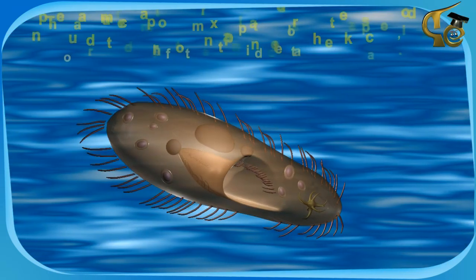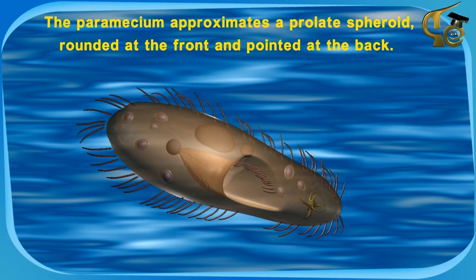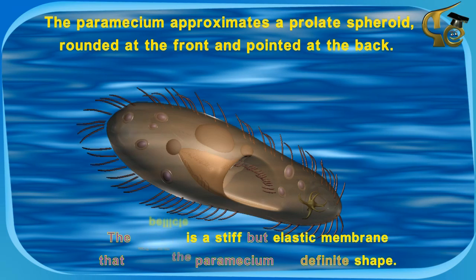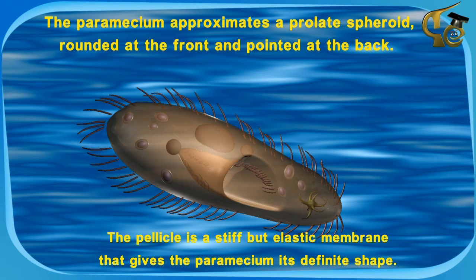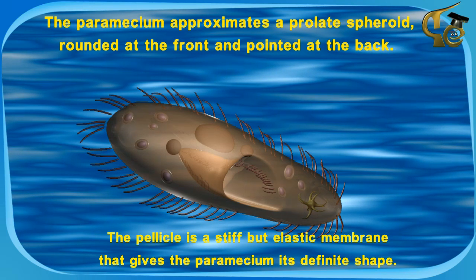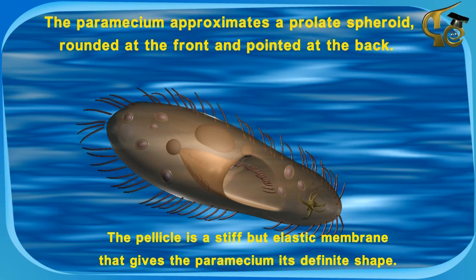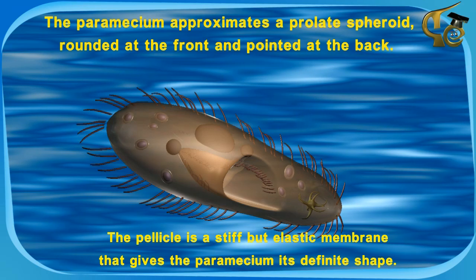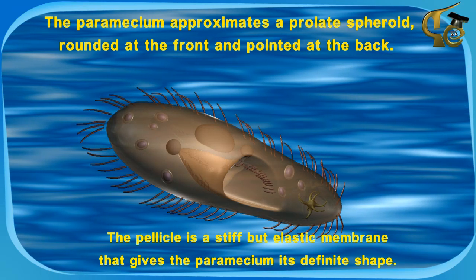The paramecium approximates a prolate spheroid, rounded at the front and pointed at the back. The pellicle is a stiff but elastic membrane that gives the paramecium its definite shape.